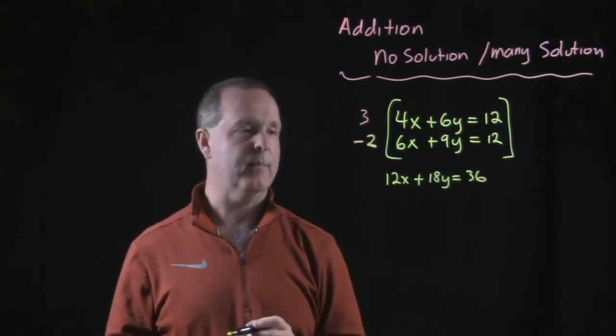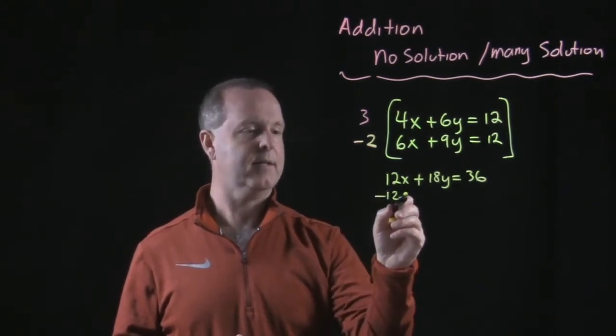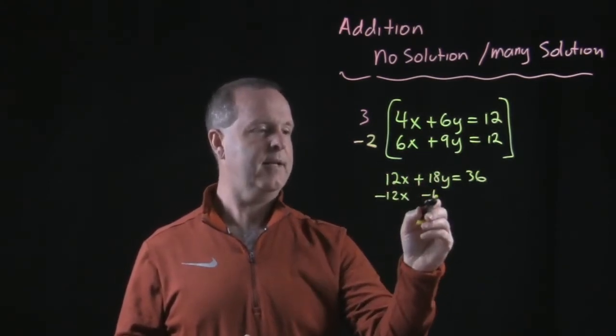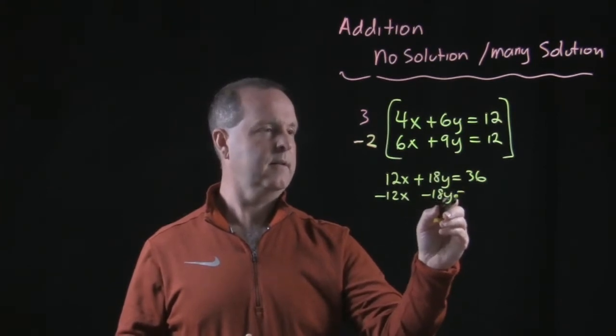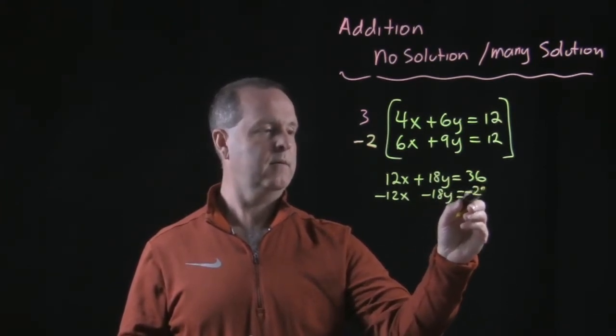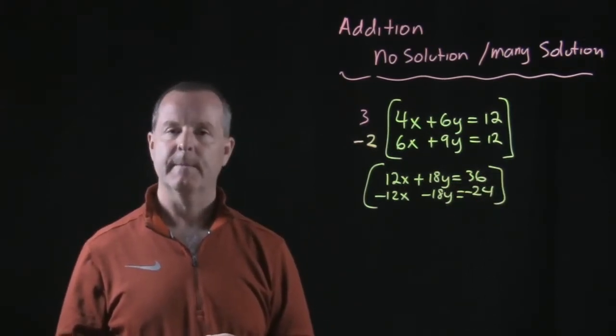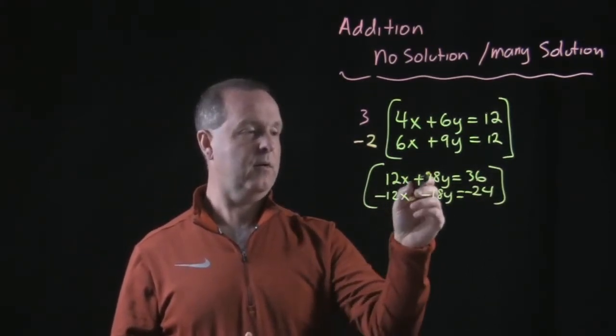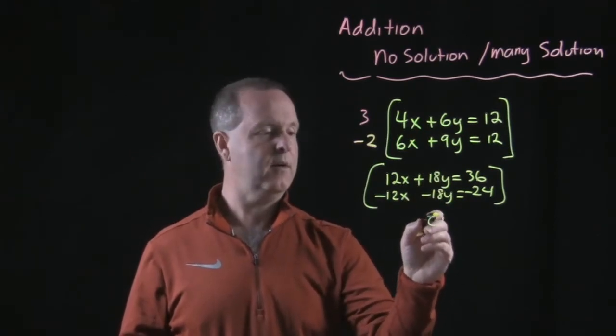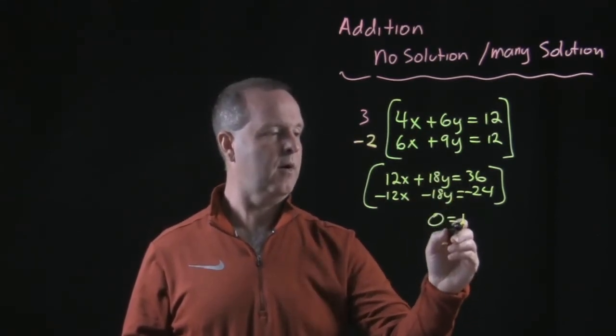The bottom one, scale it by a negative 2. So negative 12x, negative 18y equals minus 24. So there's an equivalent system. Add my x's together. They drop out. My y's also drop out. So I have zero equals 12.